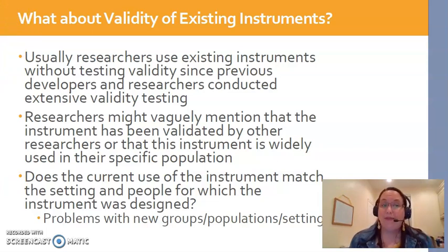So this is a little bit more confusing than reliability — I'll give you that — but hopefully with what I've given you, you'll be able to see what you should be looking for in a study, which is at least mention of these validity types. If they don't say anything about validity, that's a problem, because we cannot make assumptions based on information that's not provided to us in the research manuscript.